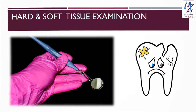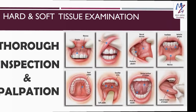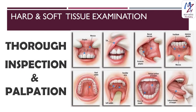The hard tissue examination begins with evaluation of each tooth, including noting decayed, missing, or filled teeth, whether the tooth is fractured or affected by any regressive alteration. This is followed by evaluation of the periodontal status, which includes the presence of plaque and calculus, gingival inflammation, mobility, and furcation involvement. The teeth are also evaluated for the status of occlusion, and finally we do an examination of the temporomandibular joint. This is followed by a soft tissue examination, which unfortunately tends to be brief in most cases.